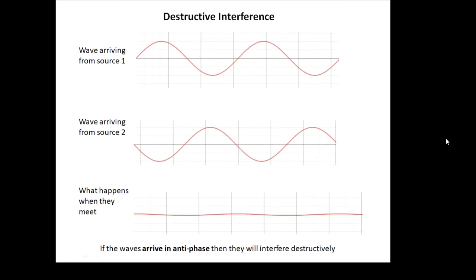If waves arrive in antiphase they interfere destructively. Waves from source one and waves from source two are in antiphase — doing the opposite: when one is up, the other is down. When these two waves meet they cancel each other out, and we get very little sound. If the waves arrive in antiphase, they interfere destructively.